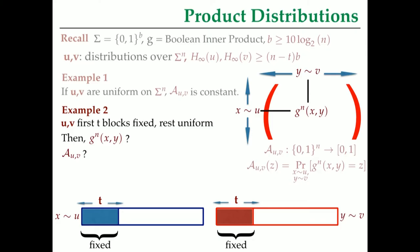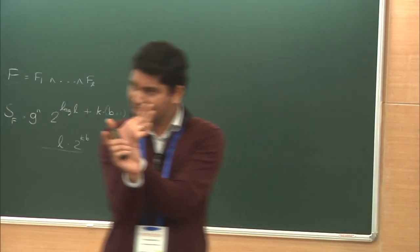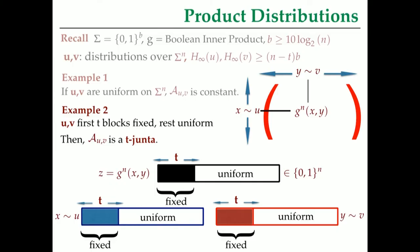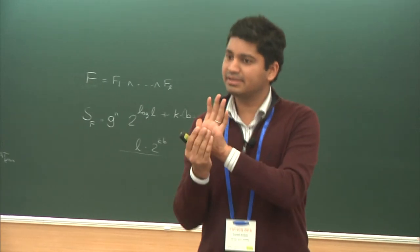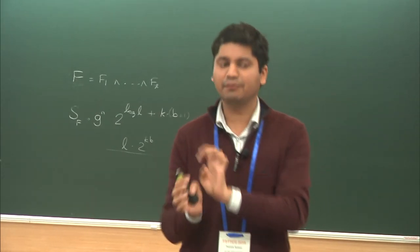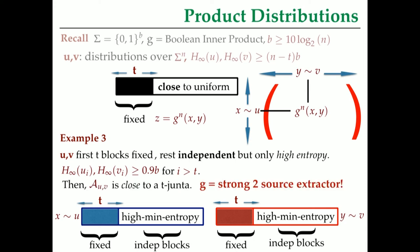Now consider a distribution where the first T blocks are fixed and the rest are still uniform. Then the first T entries of G-to-the-N will be some fixed value, while the rest still behave as uniform. So A_{UV} will depend only on what's happening to the first T bits of Z — A_{UV} is a T-junta. Furthermore, you don't even need this unfixed part to be completely uniform; as long as they have sufficiently high entropy in each block, that's enough to draw the same conclusion. This is the first time you use the fact that G is an inner product gadget — because it's something called a two-source extractor, G-to-the-N applied to this high min-entropy part still gives you something close to uniform. So A_{UV} is still close to a T-junta.